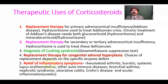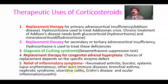Corticosteroids provide relief of inflammatory symptoms like rheumatoid arthritis, bursitis — that is inflammation of the bursa — systemic lupus erythematosus (SLE), other autoimmune diseases, bronchial asthma, nephrotic syndrome, ulcerative colitis, Crohn's disease. These last two are chronic inflammatory bowel diseases. Ocular inflammation, especially of the uveal tract — iris, choroid, and ciliary body — is also managed by steroids.